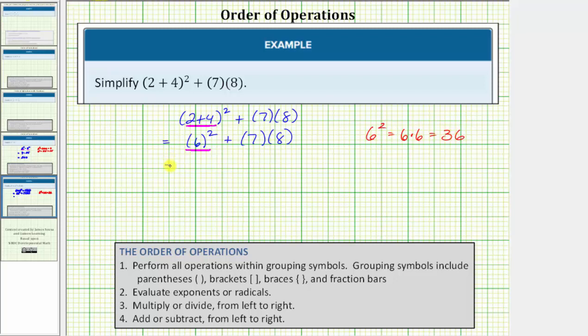So the given expression simplifies to thirty-six plus seven times eight. Moving to step three, we multiply or divide from left to right. Notice how we have multiplication here. So our next step is to find the product of seven and eight. Seven times eight is equal to fifty-six. So the expression simplifies to thirty-six plus fifty-six.